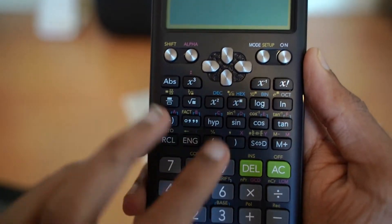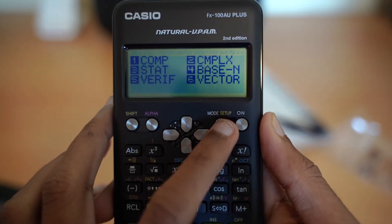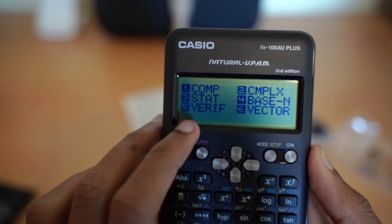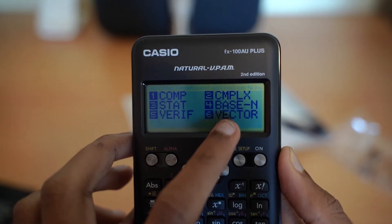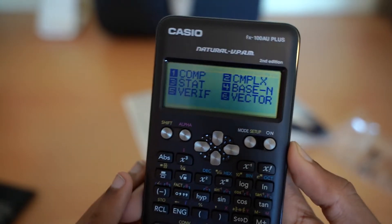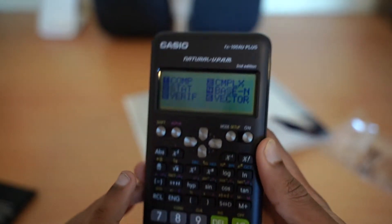I don't know how to do conversion stuff. What is your setup? There is complex stats, verifications, complex base and vectors. Yeah. Those are things.